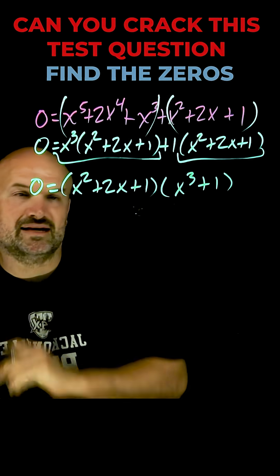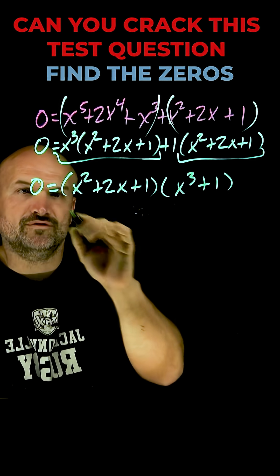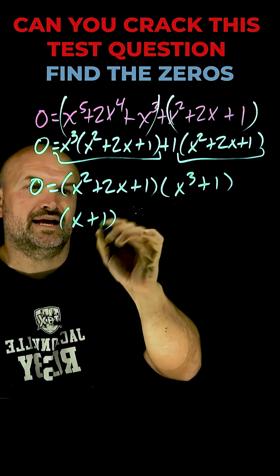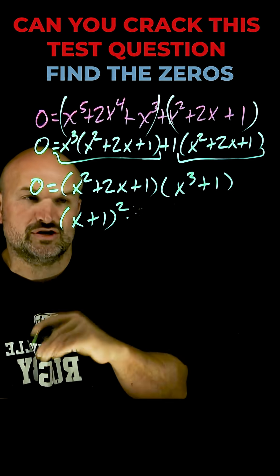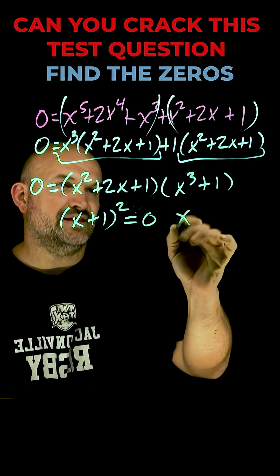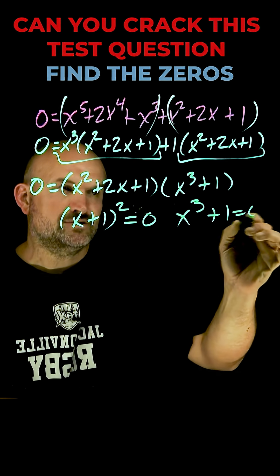Okay so now I can apply the zero product property. I can set this equal to 0. Hopefully you recognize that this is going to be what we call a binomial squared or a perfect square trinomial which factors down to a binomial squared and then this one's going to be an x cubed plus 1 is equal to 0.